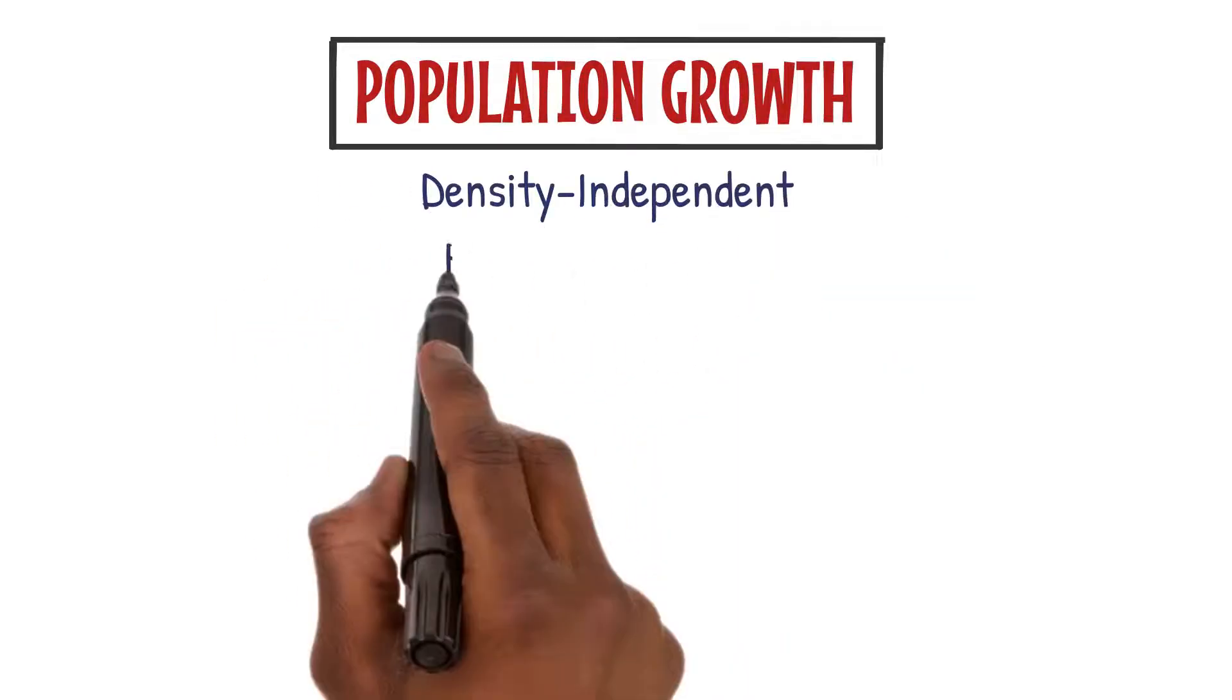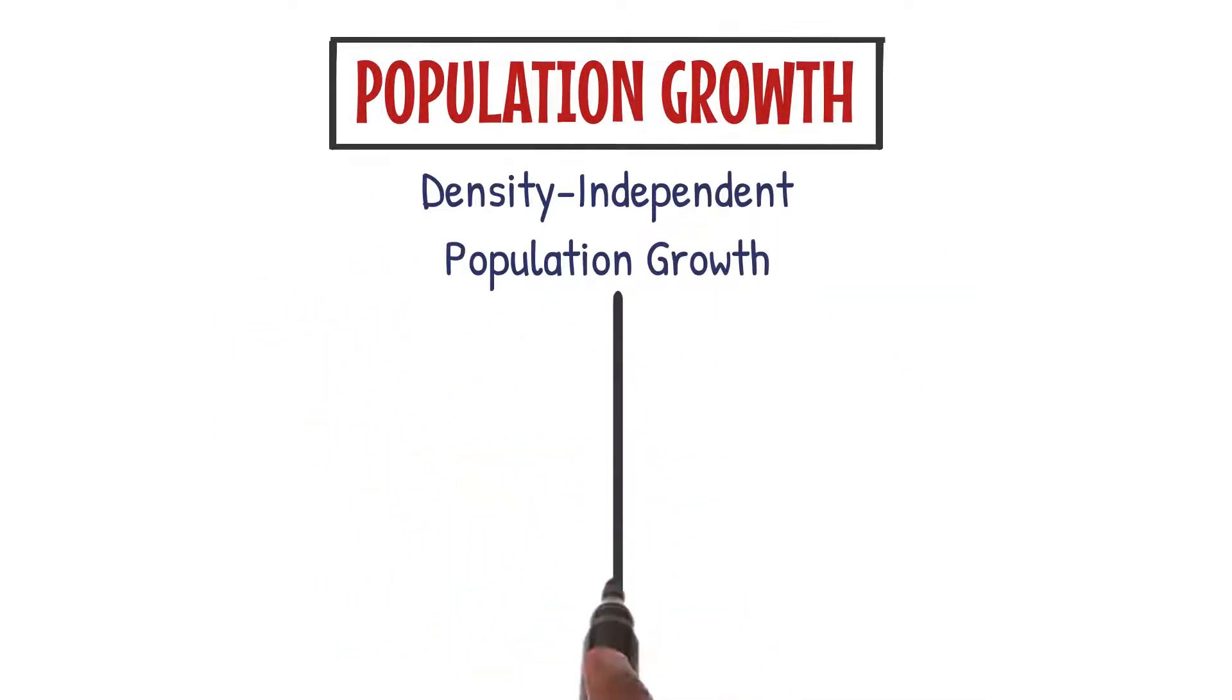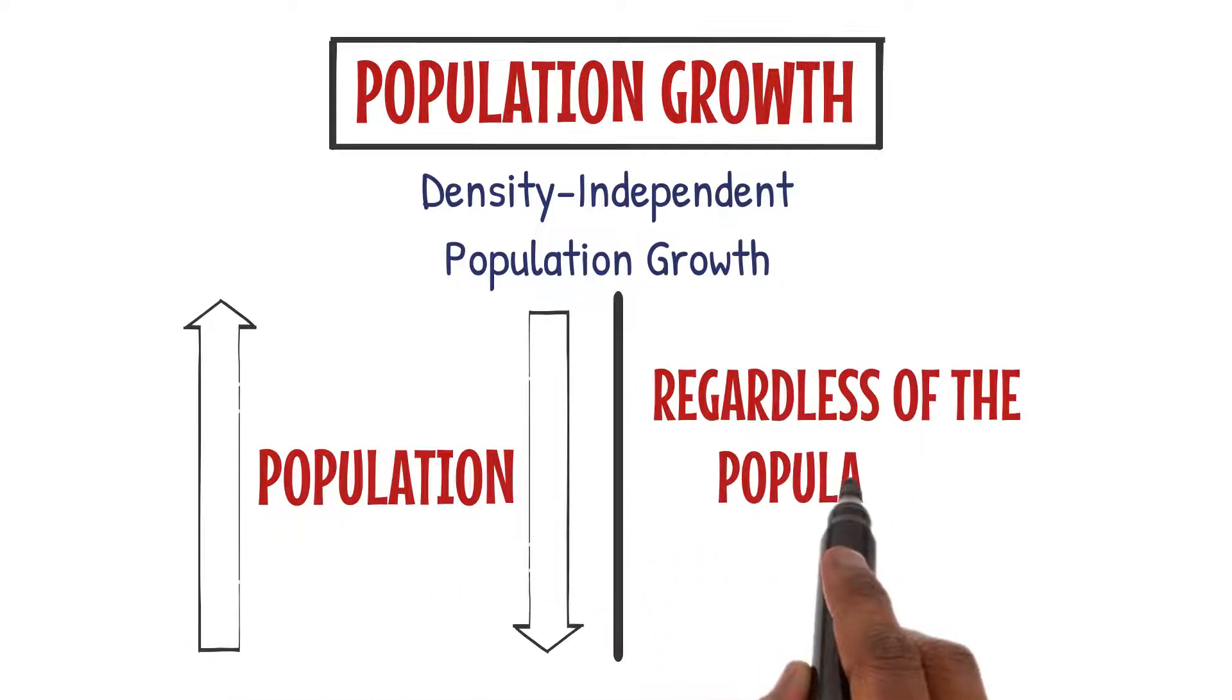Moving on to population growth, we have something called density-independent population growth. This means that the population can increase or decrease regardless of the population density. It's like a wild roller coaster ride.